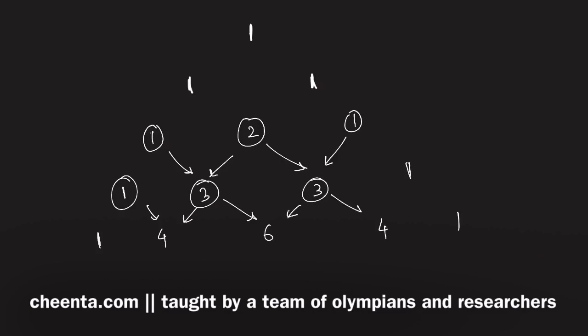The same pattern continues - it's a very beautiful pattern actually. Pascal's triangle has many outstanding properties: one, five, ten, ten, five, one and so on. In this Pascal's triangle, the hockey stick identity is hidden somehow. We have to uncover it.